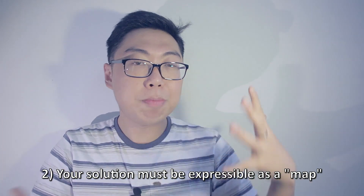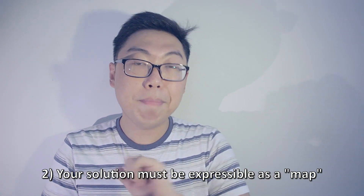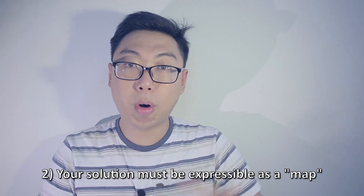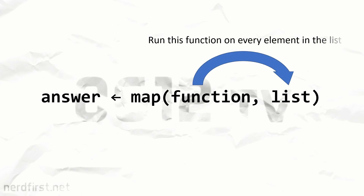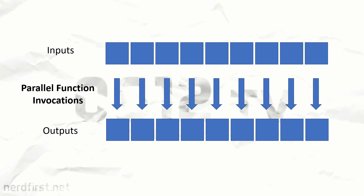Your second prerequisite is that your problem needs to be expressible in a way where we can map the function to your problem space. Here's how the mapping works. The code looks something like this — we want to map this function to all the data held within a list. So you're going to have to cast your problem into this form. Your inputs need to live in a list, and this function is going to be invoked once for every element within the list.